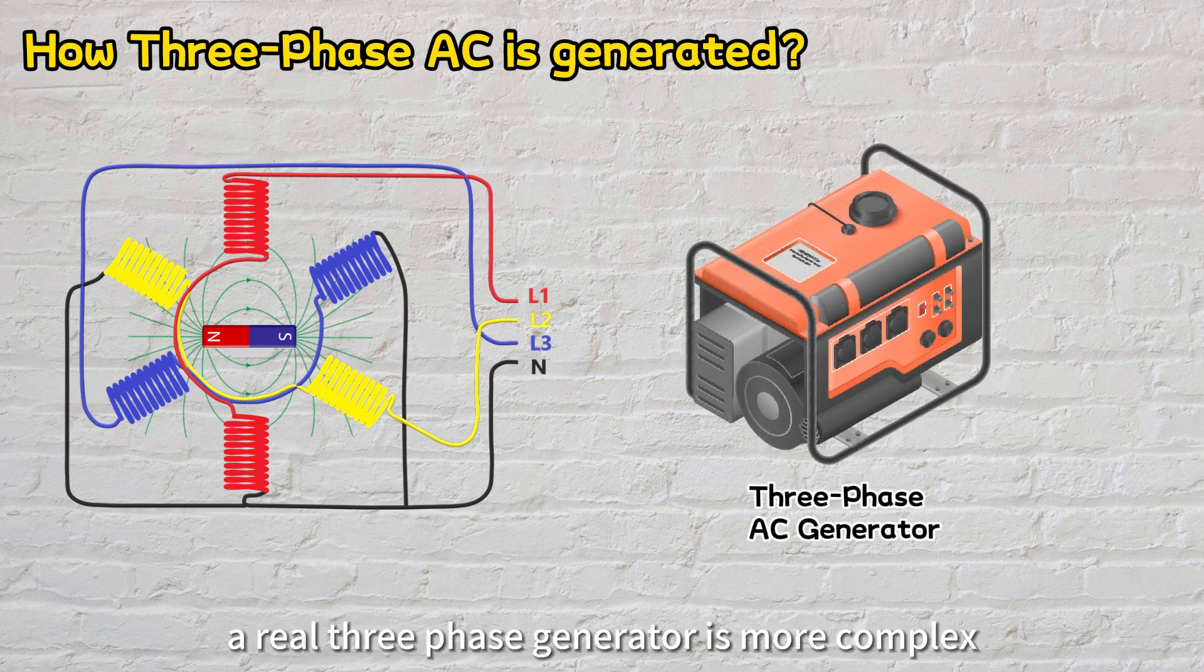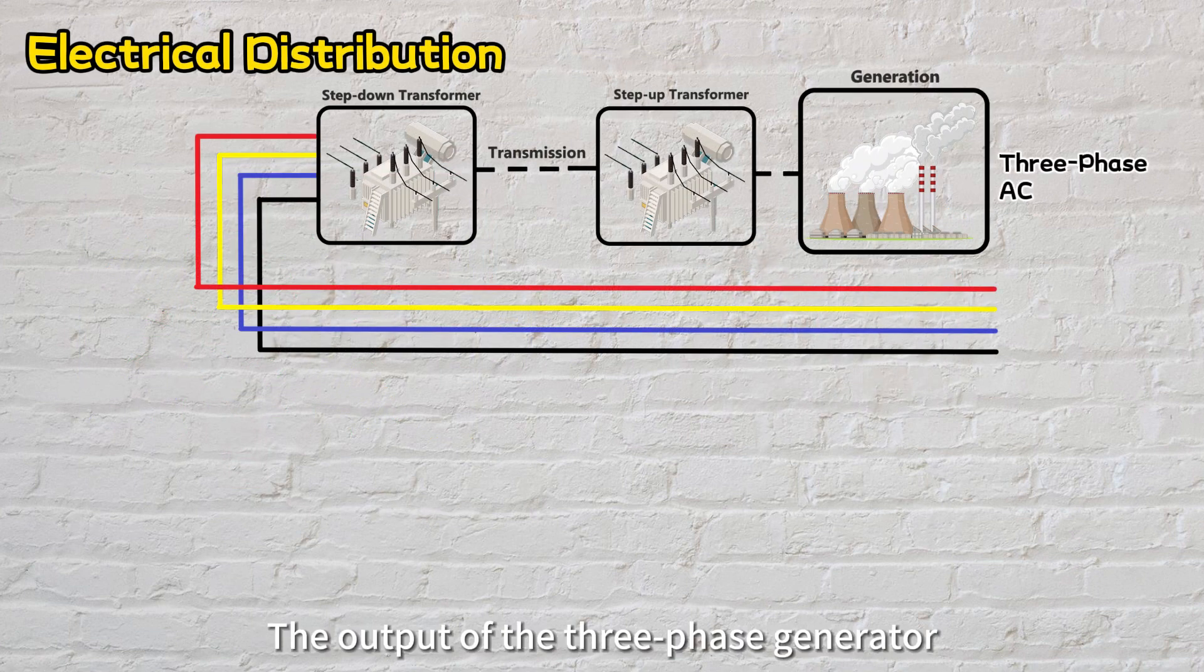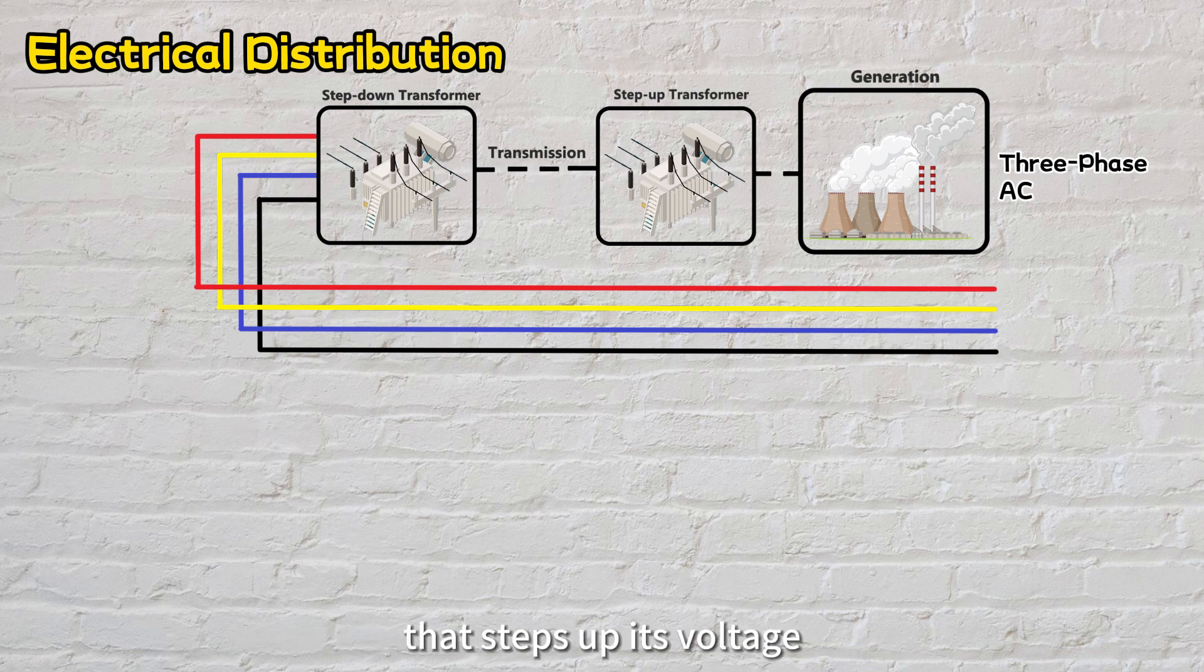In practice, a real three-phase generator is more complex, but the core operating idea stays the same. The output of the three-phase generator gets connected to a three-phase transformer that steps up its voltage before it heads off to the transmission lines.